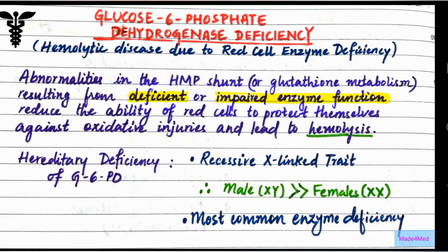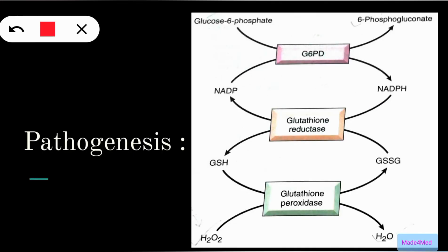Remember, G6PD deficiency is the most common enzyme deficiency. In the pathogenesis of this disease, in the first step of the HMP shunt, glucose-6-phosphate is oxidized to 6-phosphogluconate with the help of the G6PD enzyme.